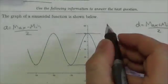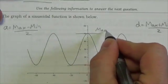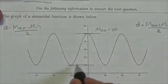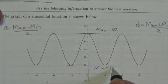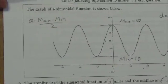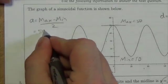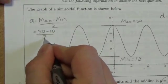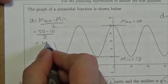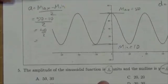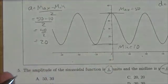We'll do this separately. So my max value here from the graph I can see is 50, and my min value here looks to be 10. Okay, so my amplitude here will be 50 minus 10 over 2, so 40 over 2 or 20. So there's my amplitude.